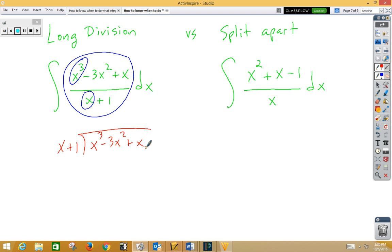Sometimes we want to do a split-apart problem. Notice that in this problem, I've got a monomial on the bottom, so I could easily split this one up, x squared over x plus x over x minus 1 over x, allowing me to integrate x plus 1 minus 1 over x dx, which is a far simpler problem.